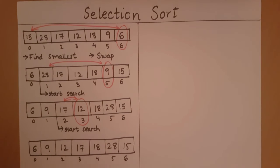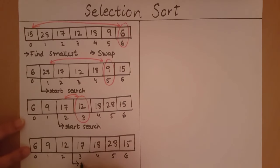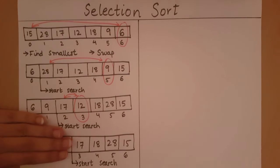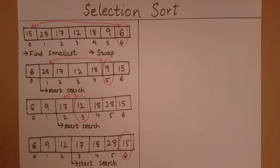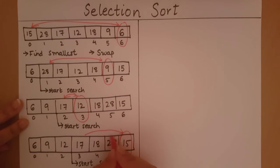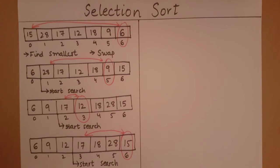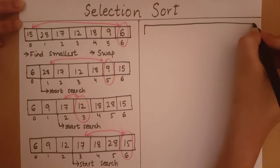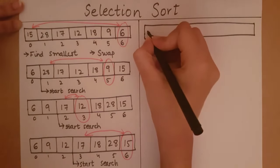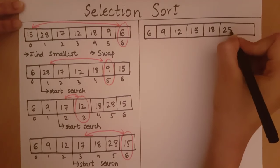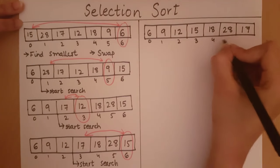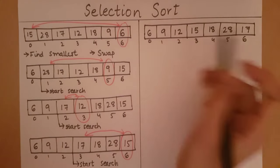We need to start our search from somewhere after 12. Within this part of the array, we select the smallest element as 15. We swap this smallest element with the element we started our search with — element 17. After swapping, 6, 9, 12, and 15 have come to the correct positions.